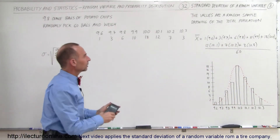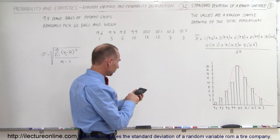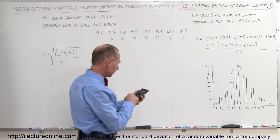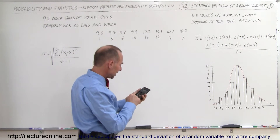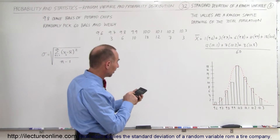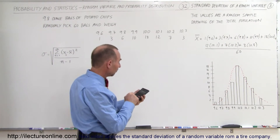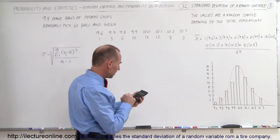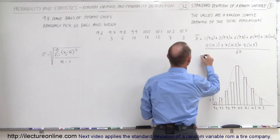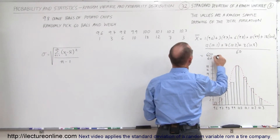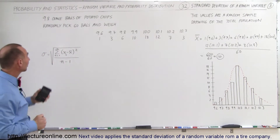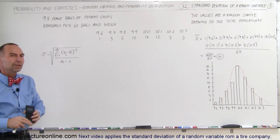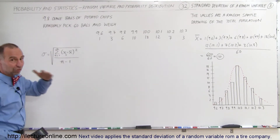Using a calculator: 9.6 + 3×9.7 + 6×9.8 + 10×9.9 + 18×10.0 + 12×10.1 + 7×10.2 + 3×10.3 equals 600, divided by 60, which equals 10. So the average number of ounces in each bag is 10 ounces. That's good because we want at least 9.8 ounces — otherwise we'd be in violation of the rule that a bag must contain at least what is claimed on the label.